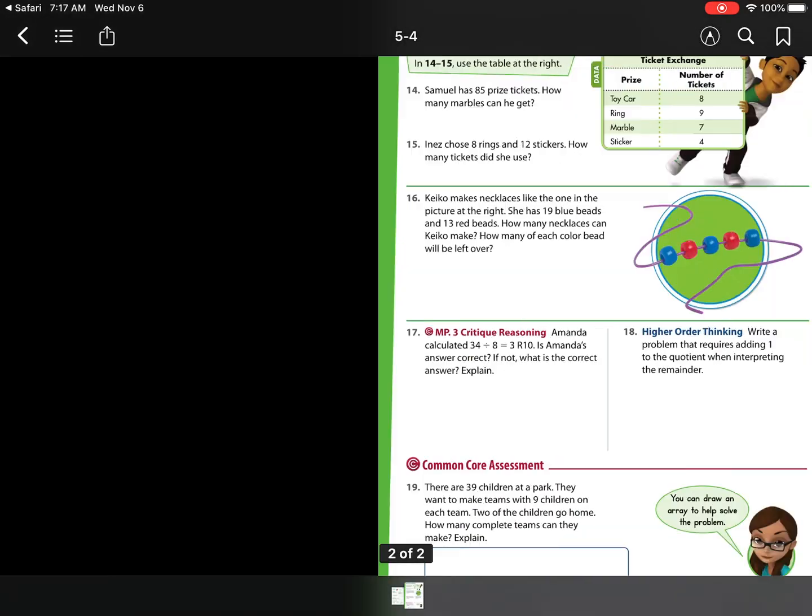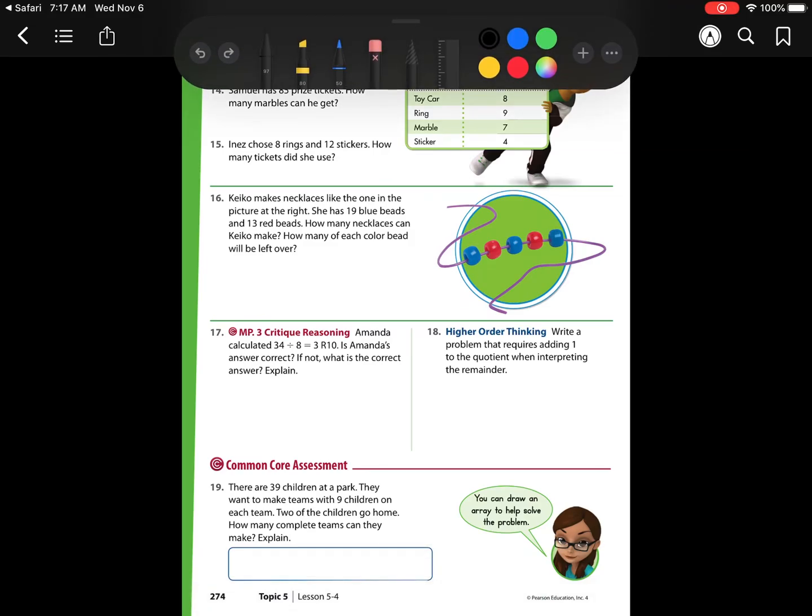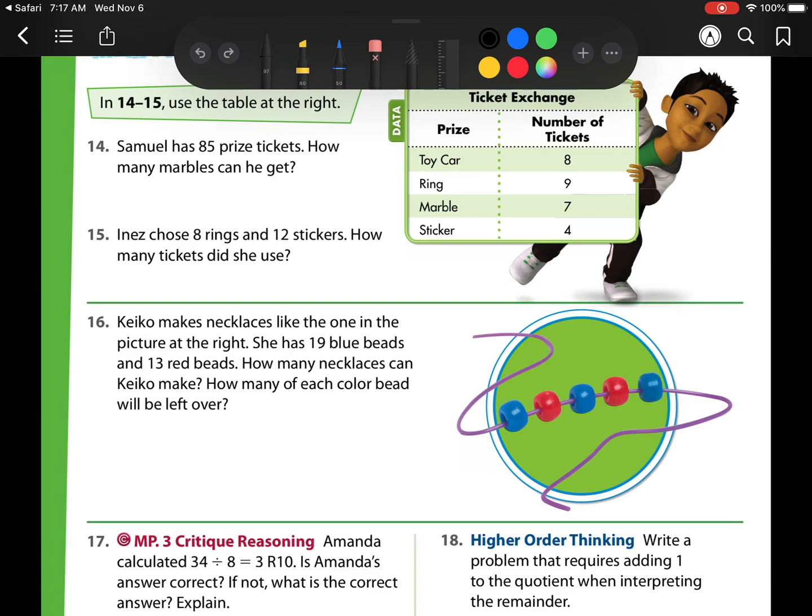Okay, let's go to our next one. Samuel has 85 prize tickets. How many marbles can he get? Well, looking over here, I see I need 7 tickets. So I have 85 broken up into groups of 7. Well, I know that 7 can go into 80 how many times? Well, I know 7 can go into 70 10 times. Then it would be 77. Then 84. And then 91. But 91 is too big. So I can spend 84 tickets, which would be 10 groups is 70, 11 groups is 77, 12 groups is 84. So he can get 12 marbles.